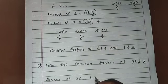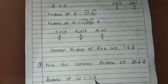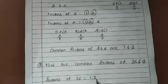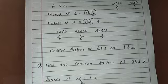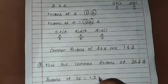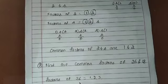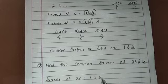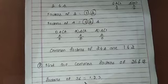Continuing the factors of 36: 2 divides 36 eighteen times, so 2 is a factor of 36. Three divides 36 twelve times, so 3 is a factor of 36.